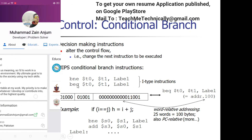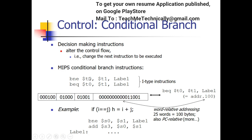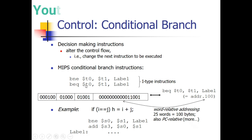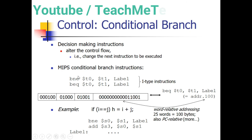For Branch Equal and Branch Not Equal: rs is the first register and rt is the second. We subtract the value of the rs register from the rt register. In the case of Branch Equal, if the result is zero (both values are the same), we jump to the label. In the case of Branch Not Equal, we jump to the label whenever the result of the subtraction is not equal to zero. The opcode of bne or beq goes in the opcode field, followed by the rs register number, then the rt register number.